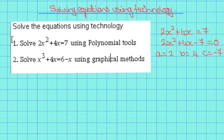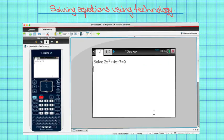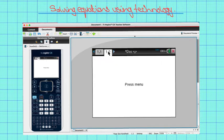We can now use the polynomial tools app to solve the equation. Now let's go to our TI-Inspire and solve the equation. To solve the equation 2x squared plus 4x minus 7 equals 0, we must first open a calculator page.